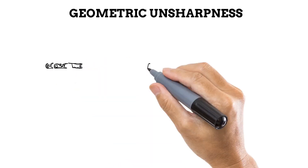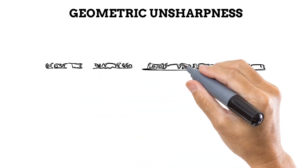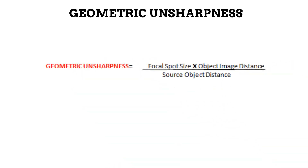The total amount of geometric unsharpness occurring due to these three factors can be estimated using this formula: Geometric unsharpness equals the focal spot size multiplied by the OID, divided by the source object distance. The source object distance is a derivative of the SID, which we will explore in the next video.